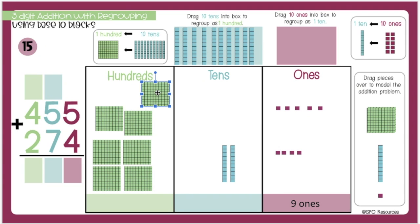I moved 1 hundred into the hundreds place to represent the 10 tens that are regrouped as 1 hundred. Now I have 2 tens in my tens place, and I have 7 hundreds in the hundreds place.